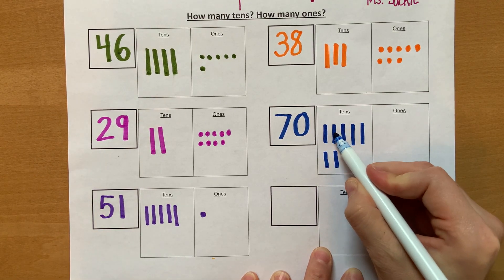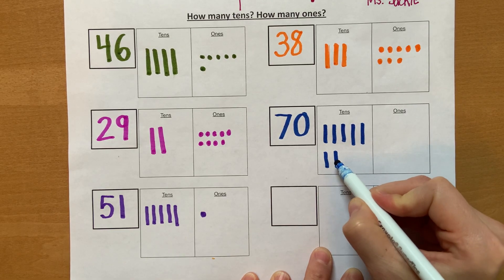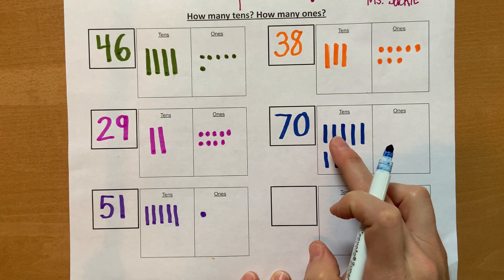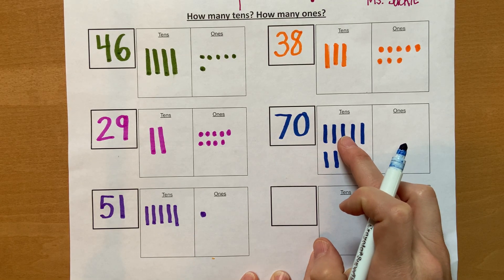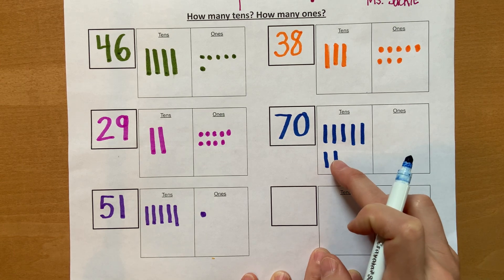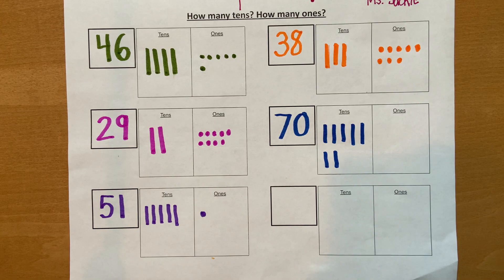10, 20, 30, 40, 50, 60, 70. Listen to that again: 10, 20, 30, 40, 50, 60, 70. They end with T, not teen. Make sure we don't make that error, right? It's a tricky one.